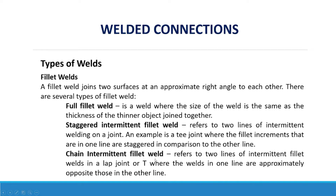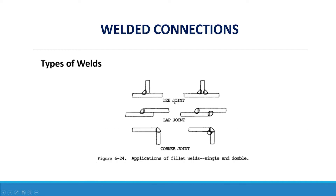A chain intermittent fillet weld refers to two lines of intermittent fillet welds in a lap joint or T-joint where the welds in one line are approximately opposite those in the other line. Shown here are examples of a T-joint, a lap joint or overlapping joint, and a corner joint — illustrating the applications of fillet welds in single and double configurations.